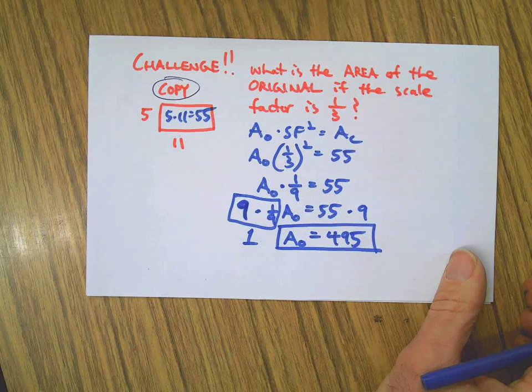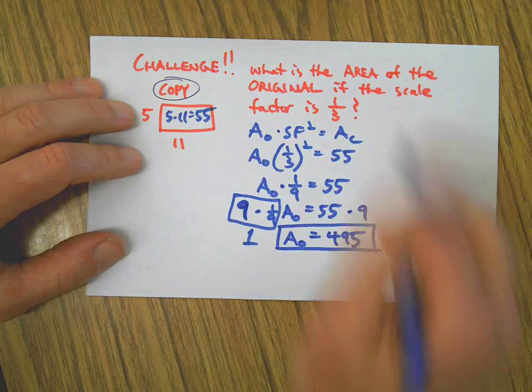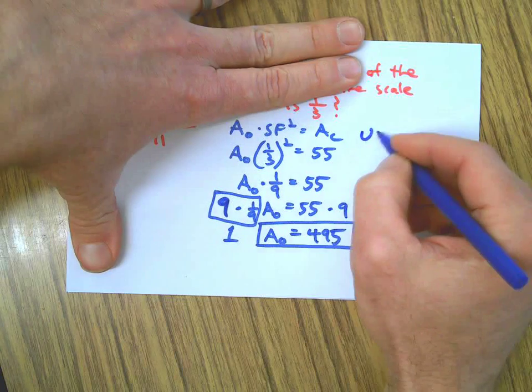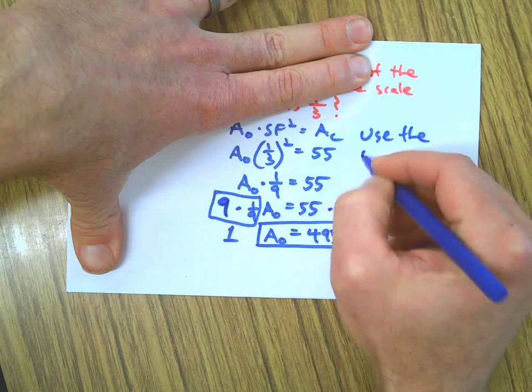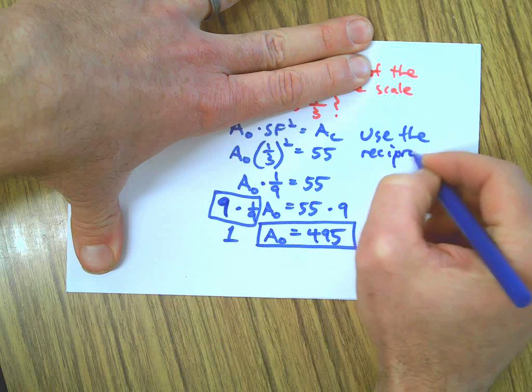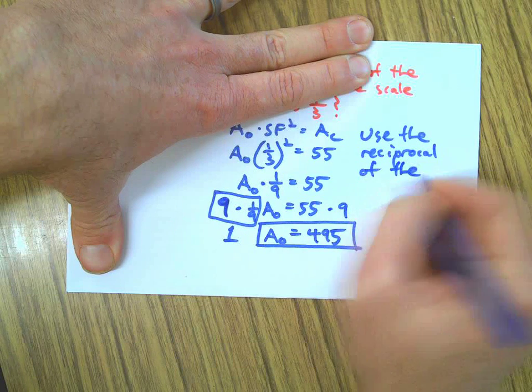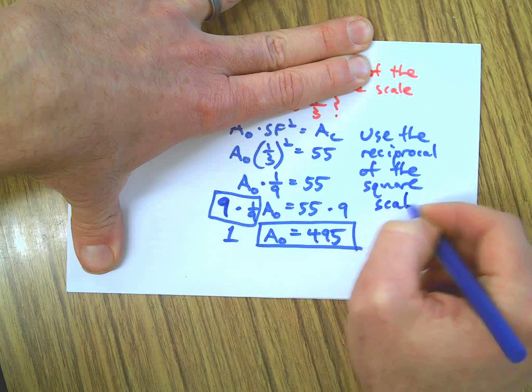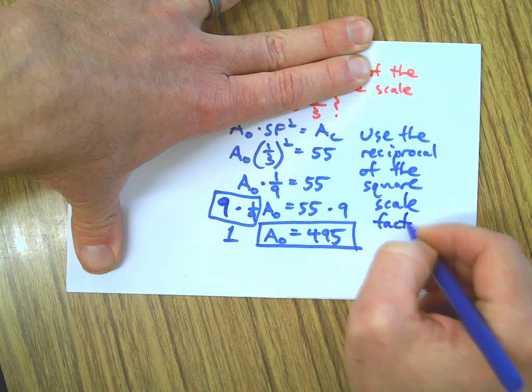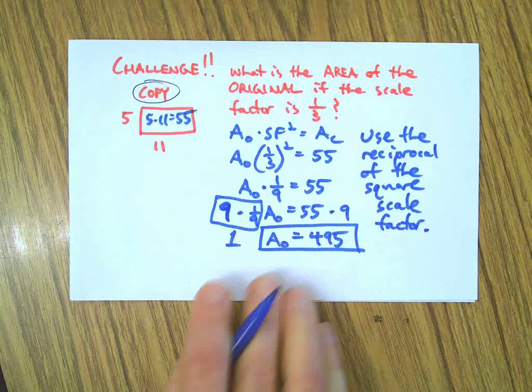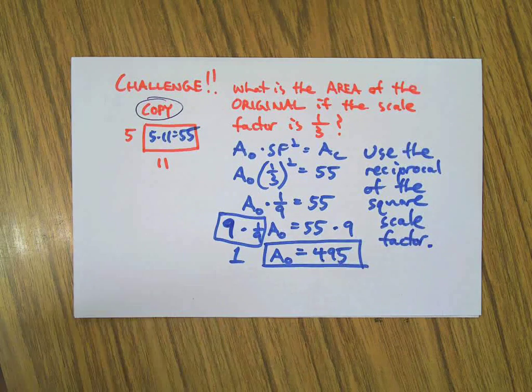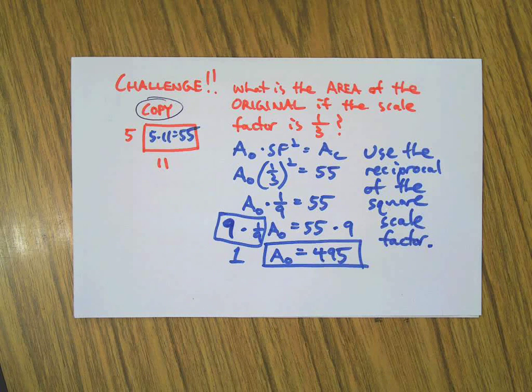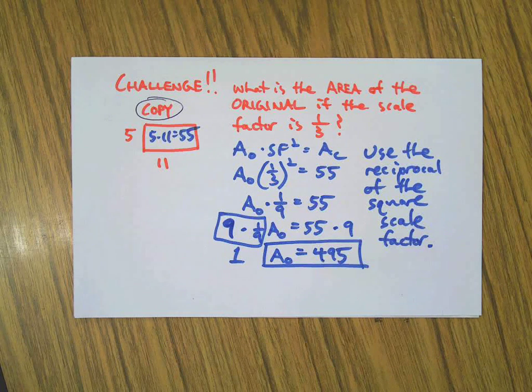Okay, so anytime you've got the area of the copy and you need to work backwards, we use the same formula, but you could just remember to use the reciprocal of the squared scale factor. Okay, that's a little shortcut you could use when you have to work backwards from the copy to get to the original. All right, thanks for playing, thanks for doing some practice problems. Hope you're feeling good about this stuff now, and we'll see you next time.